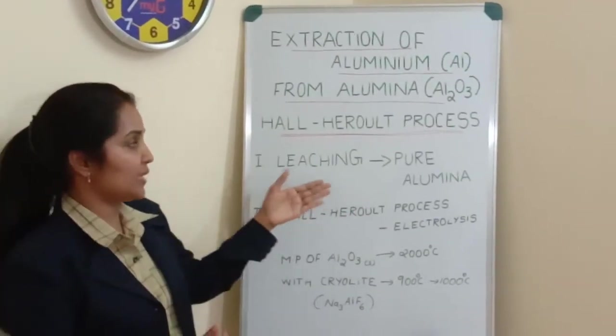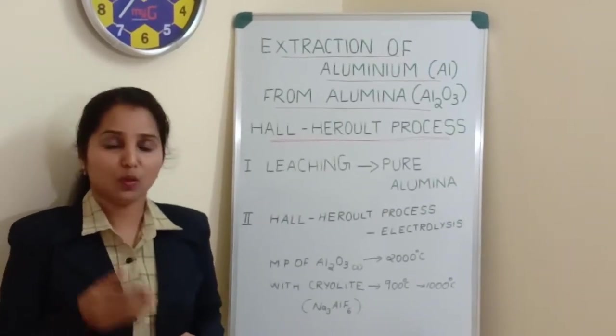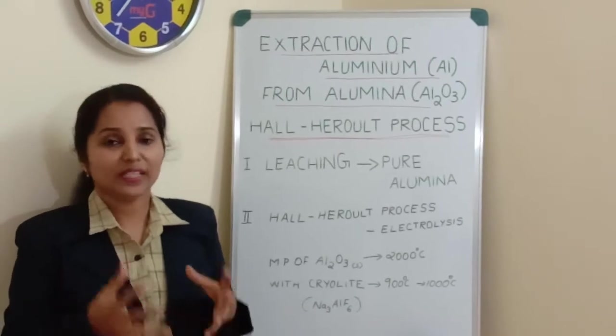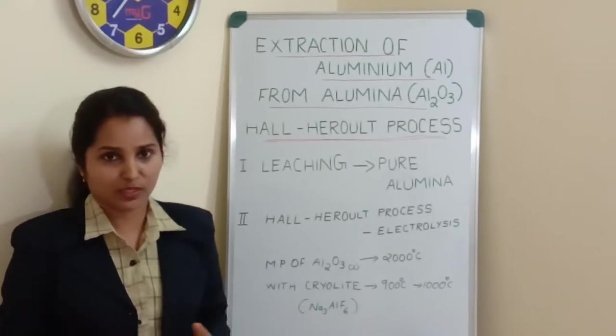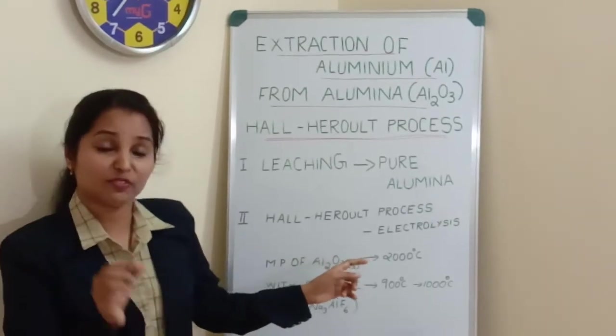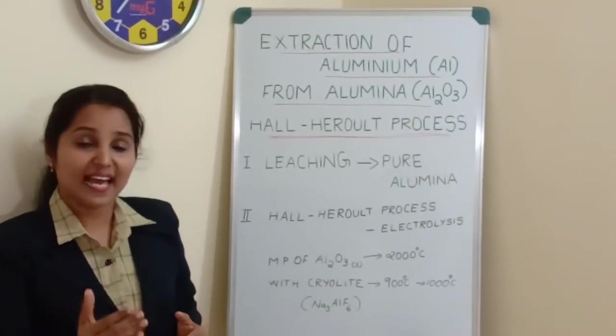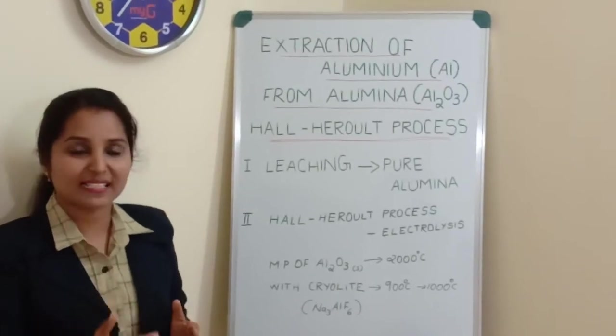Leaching of Bauxite ore will give us pure alumina. And once we get the pure alumina or Al2O3, we can carry out Hall-Héroult process. And Hall-Héroult process is a process of electrolysis. That is, the process is done by carrying electric current or passing electric current.